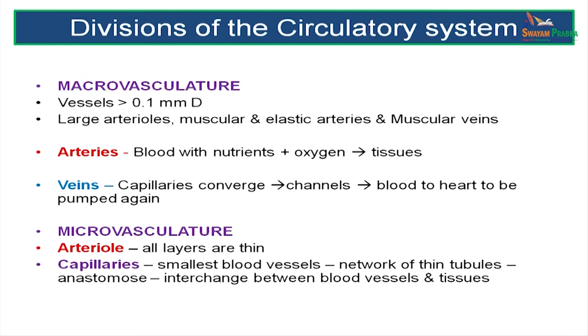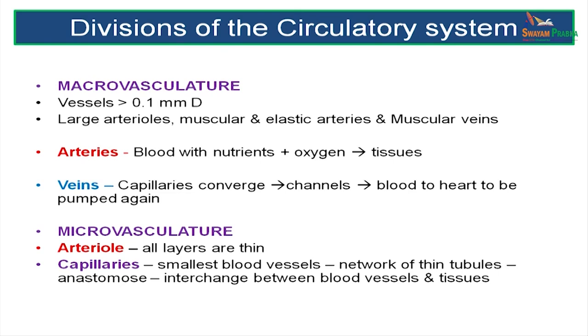The divisions of the circulatory system include the heart and the blood vessels. The blood vessels are divided into a macrovasculature and a microvasculature. Macrovasculature means vessels more than 0.1 millimeters in diameter. These include large arterioles, muscular and elastic arteries and muscular veins. Arteries carry oxygenated and nutrient-rich blood from the heart to body tissues, while veins carry deoxygenated blood from the capillaries and tissues towards the heart.